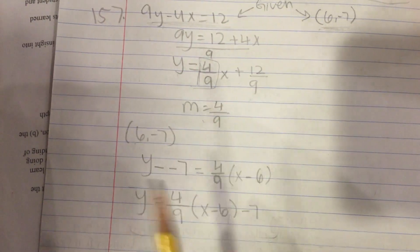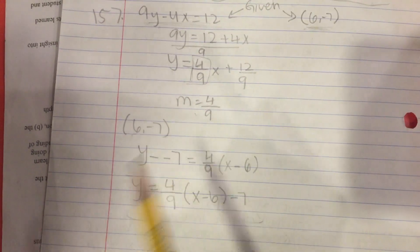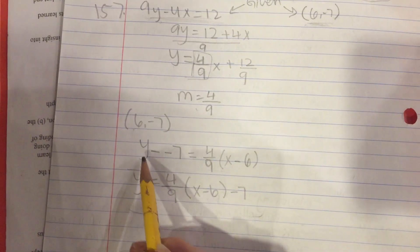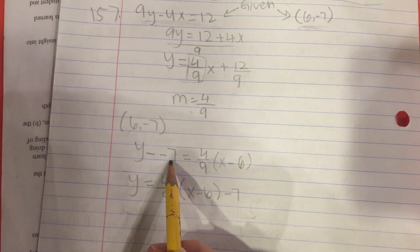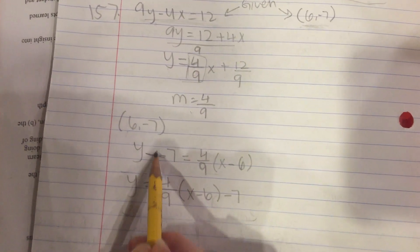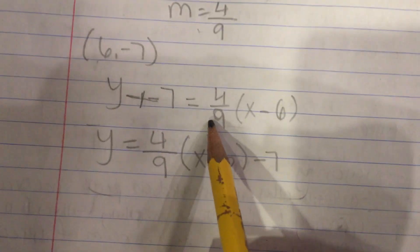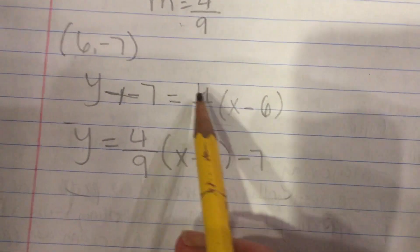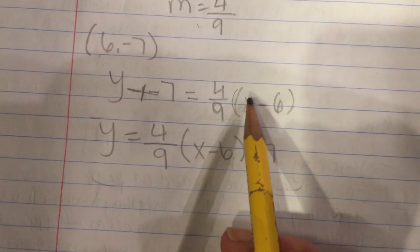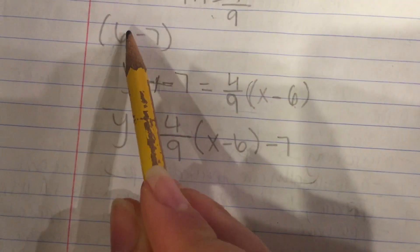You can use the point-slope form because we have a slope and a point. It follows y minus y1. So y plus 7 equals 4 over 9, the slope, times x minus x1 from our point.